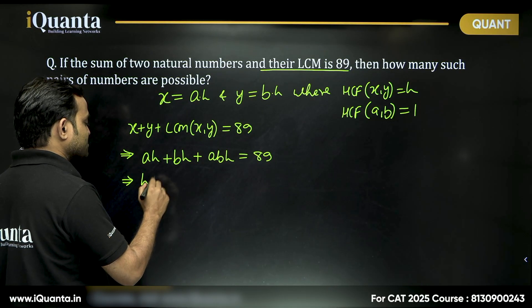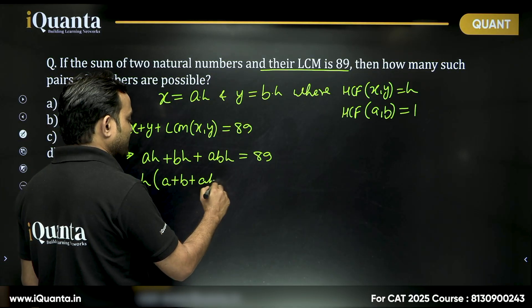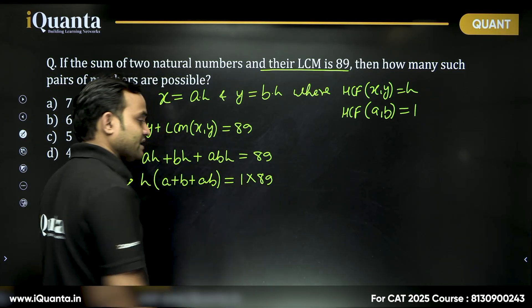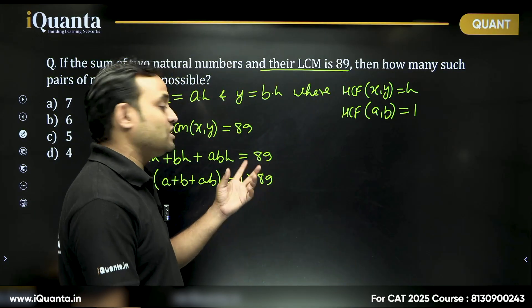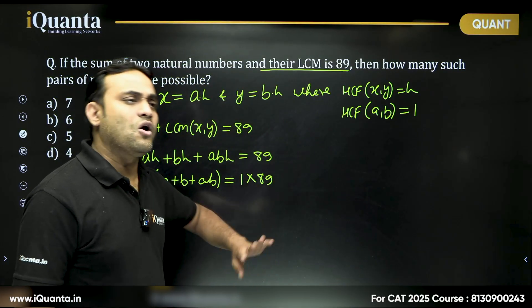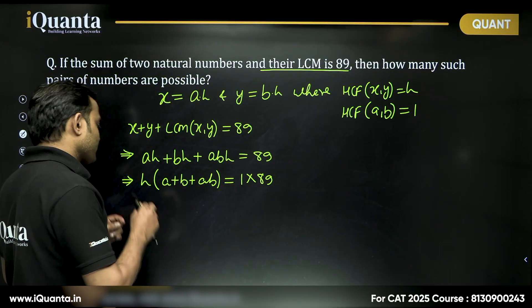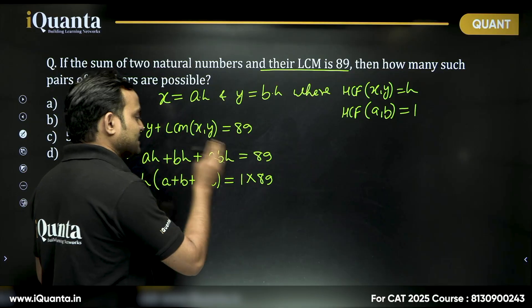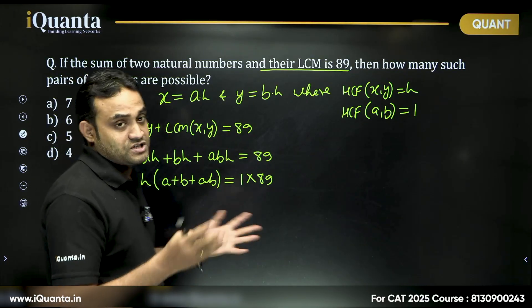Now, can I take H common? Then I get A plus B plus AB equals... Now 89 can be written as 1 into 89. 89 is a prime number, it can be factorized in only one way: 1 into 89 or 89 into 1. But think about this, if I take H as 89, then A plus B plus AB will be 1, which is not possible.